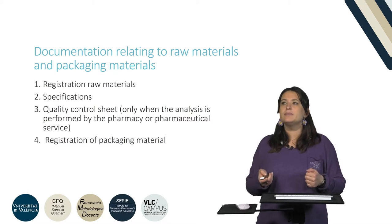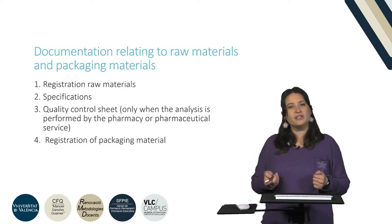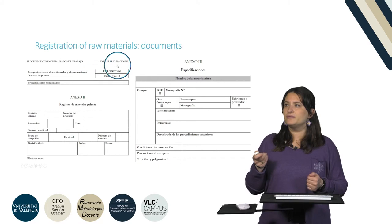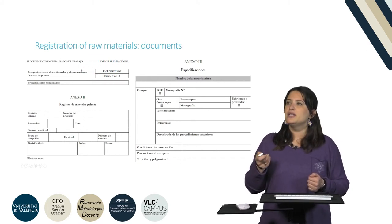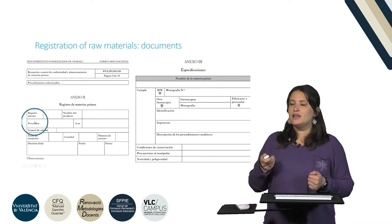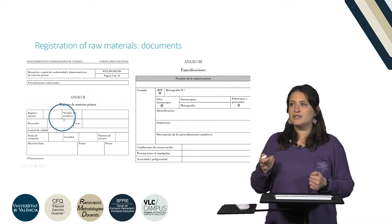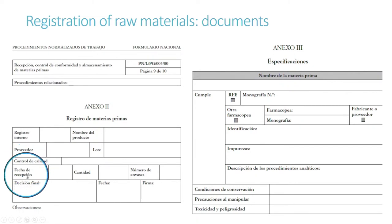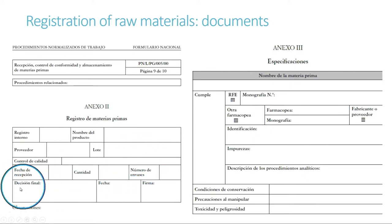We have special documents for the packaging material as well. In this slide we can see the documents from the Spanish national formulary used to register all raw materials. Here we can see all the information regarding the bulk materials: a register number, name of product, which lab it comes from, the batch number, whether quality control is met or not, reception date, number of packing materials, and whether — after the quarantine period — this bulk material can be used for further processing.